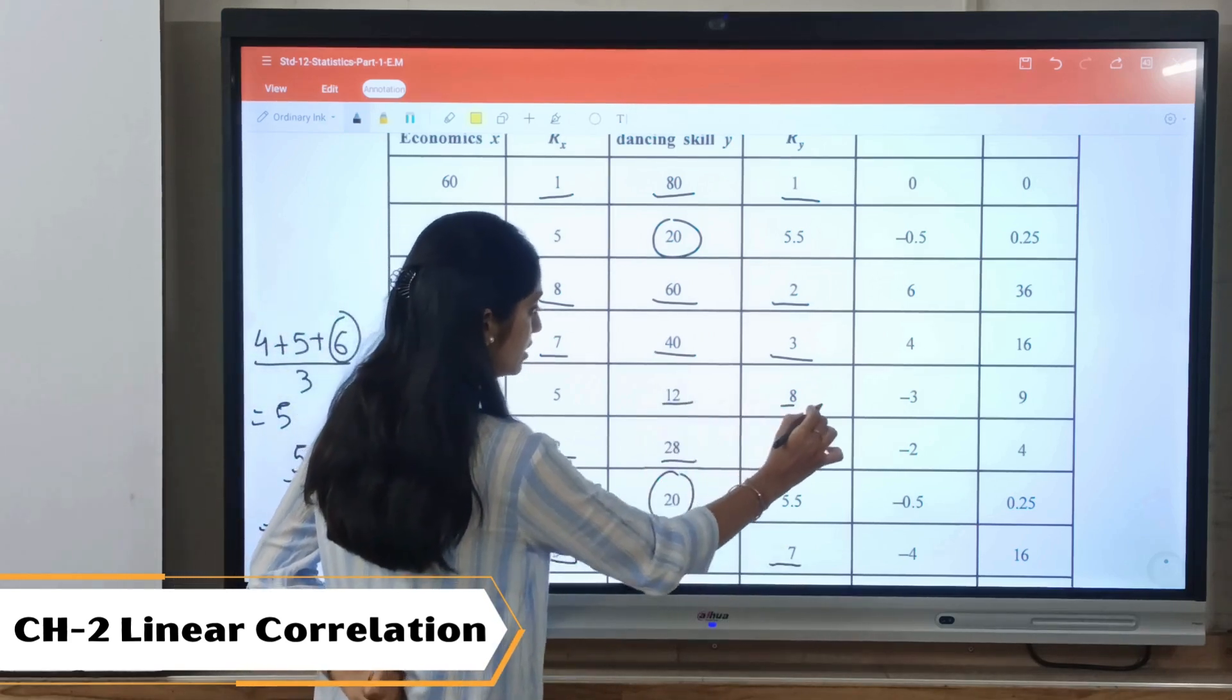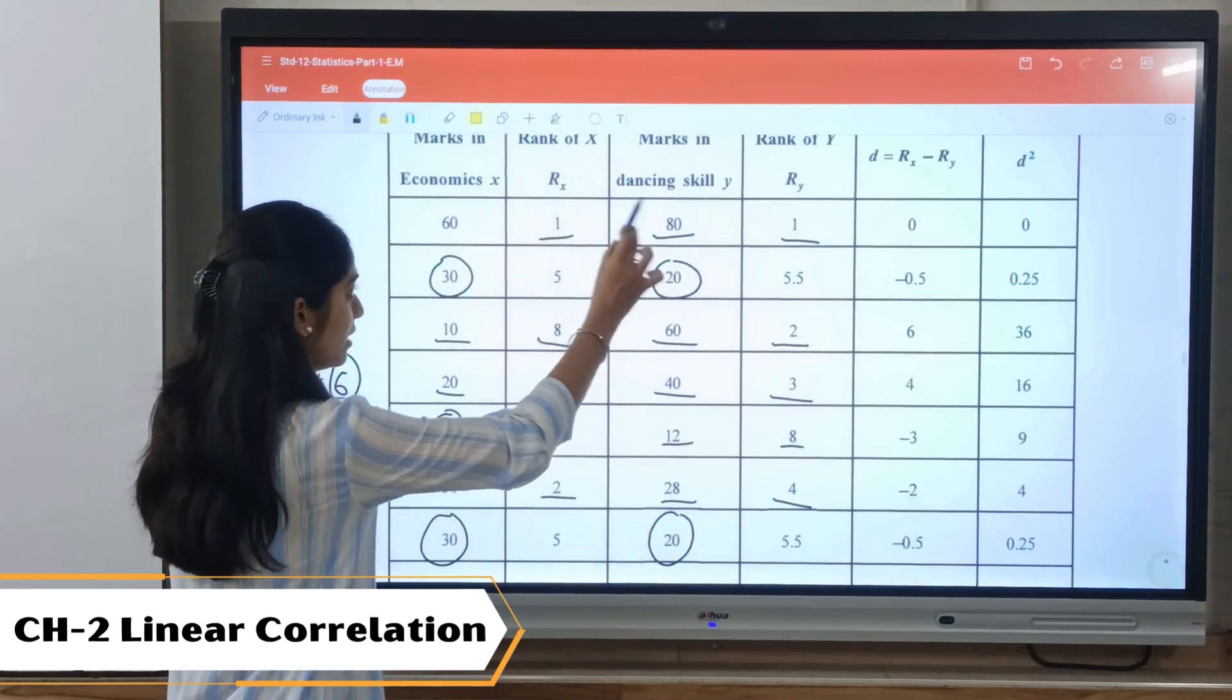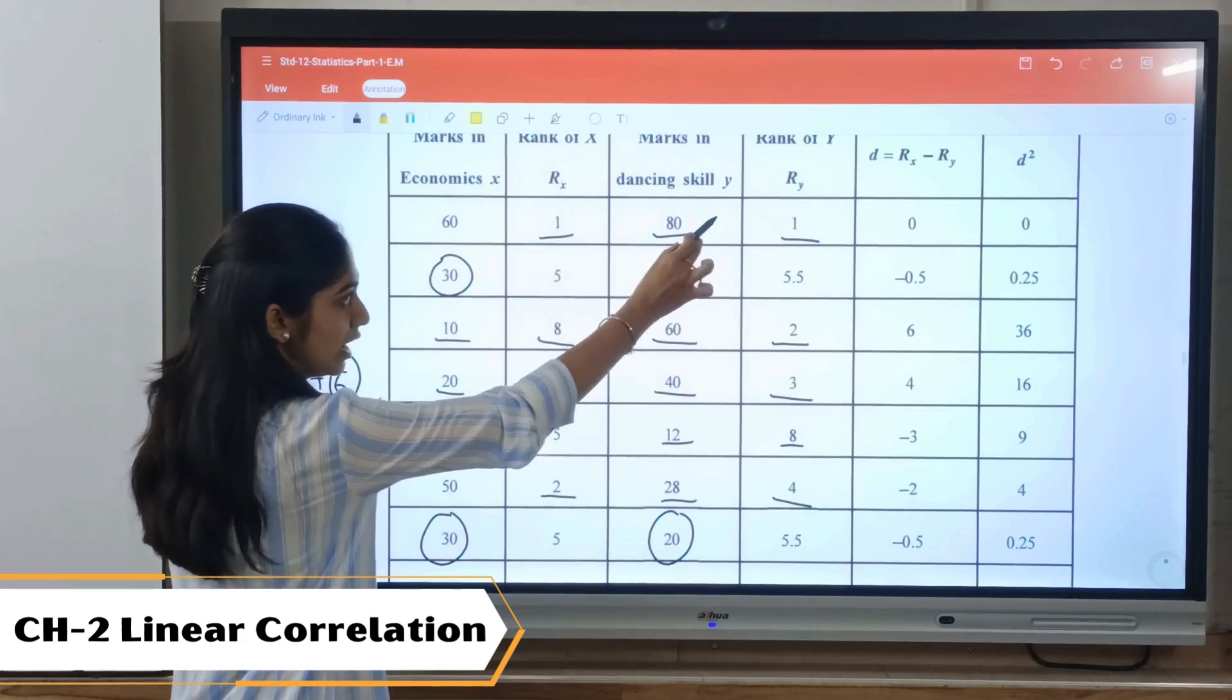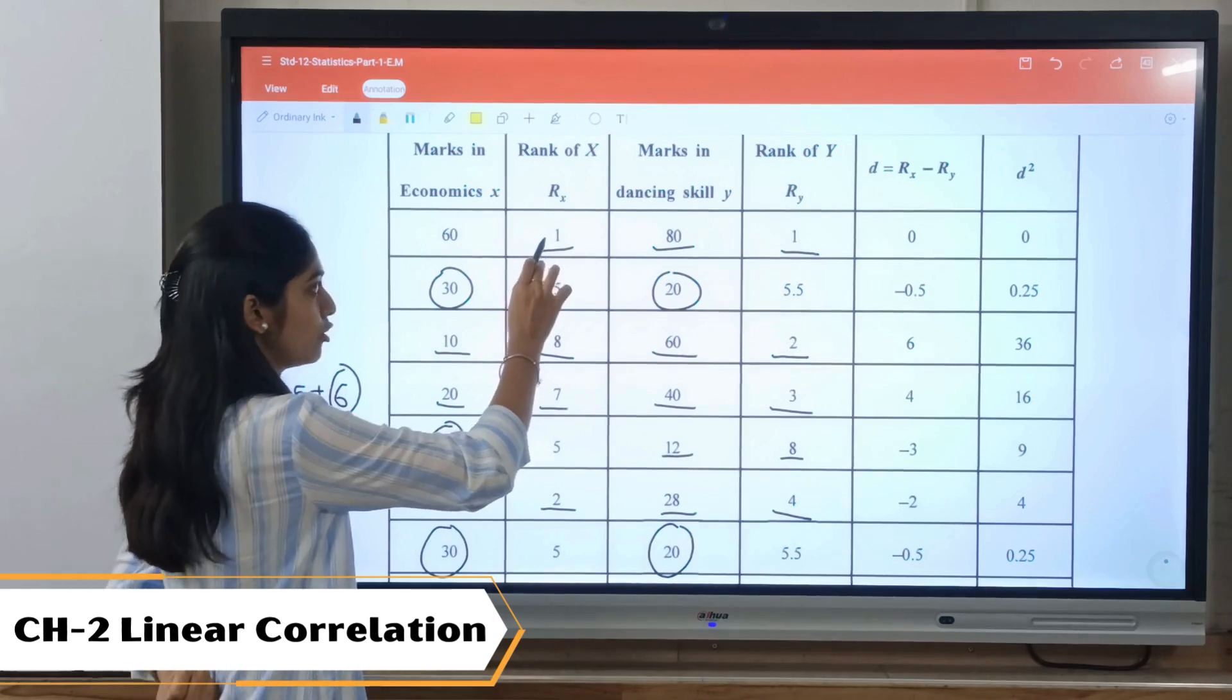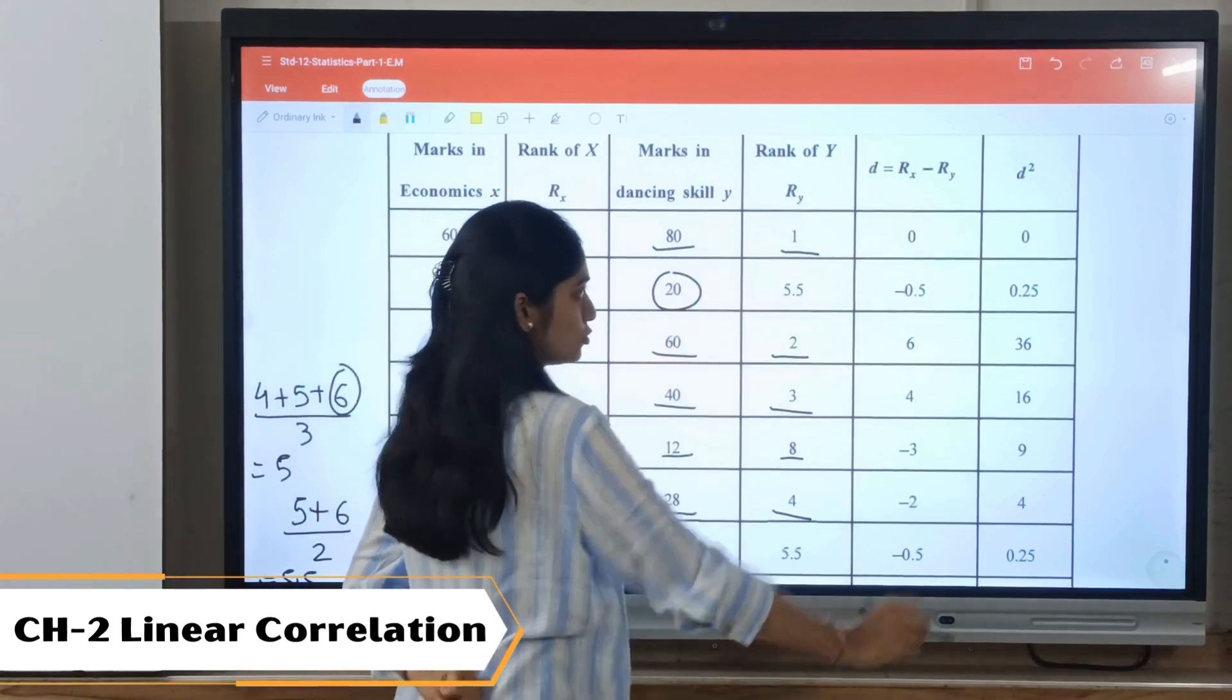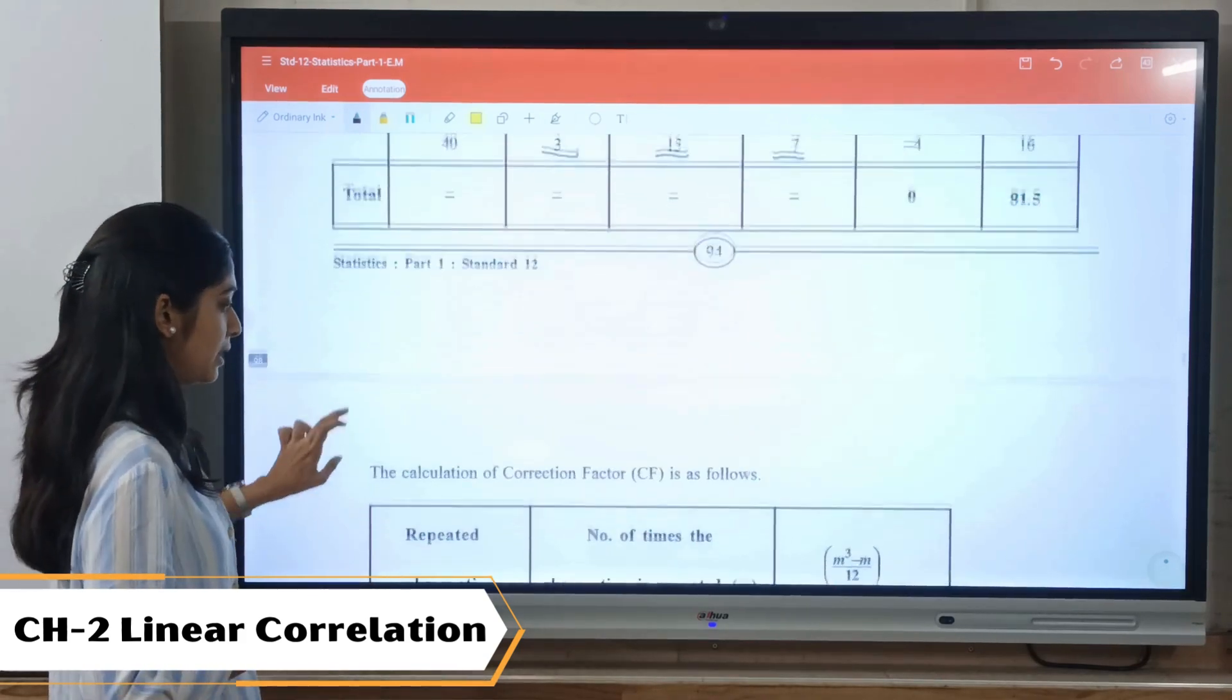So here we got our value of Rx and Ry, and we are supposed to find out d, that is the difference between rank of x and rank of y. And we are supposed to find out d square. Now there is a slight change in the formula when numbers are repeating - that is, we are supposed to find out cf, the correction factor.